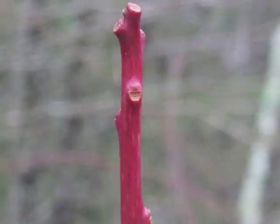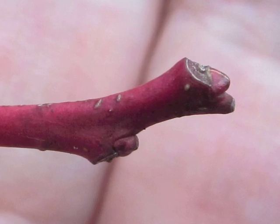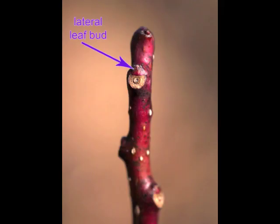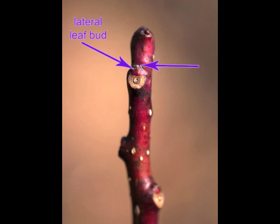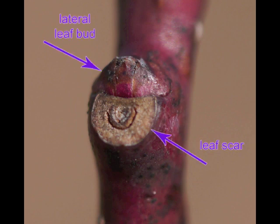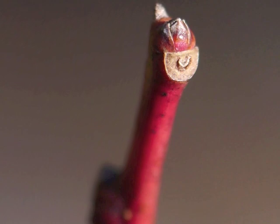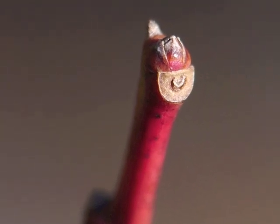Winter twig tips look blocky or chunky and do not have a terminal bud. Leaf buds alternate on the twig and are positioned above the prior year's leaf scar. The lateral bud is insignificant and seems to be submerged into the twig, with a somewhat pointed tip. Leaf scars are shaped like a half circle, each with only one bundle scar marking the location of the leaf's vascular bundle. Sourwood's bundle scar has a crescent or V shape.